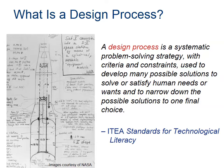I like what this slide says about the design process. The ITEA, which is a standards for technological literacy — one of the standards I follow when I teach this class — says that a design process is a systematic problem-solving strategy with criteria and constraints used to develop many possible solutions to solve or satisfy human needs or wants, and to narrow down the possible solutions to one final choice. I agree with that, though I would change one thing: you can really solve anything, not just human needs or wants.